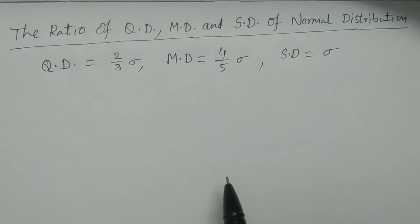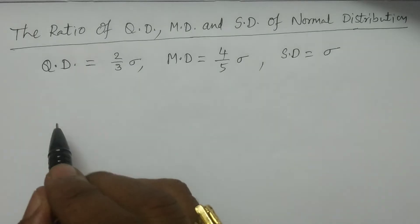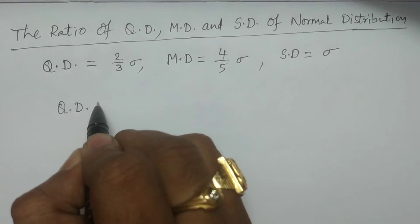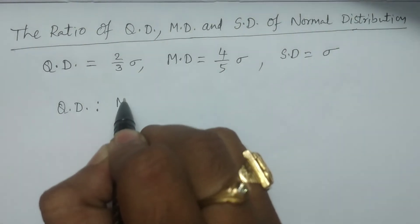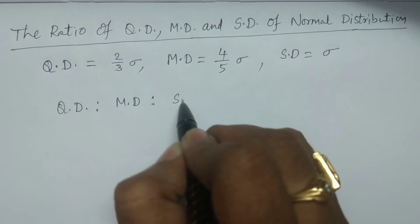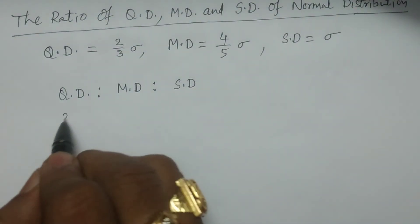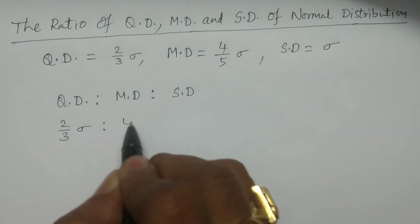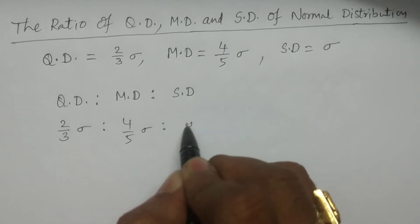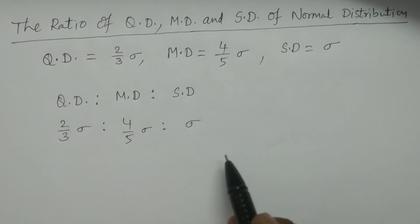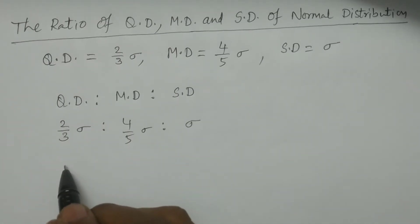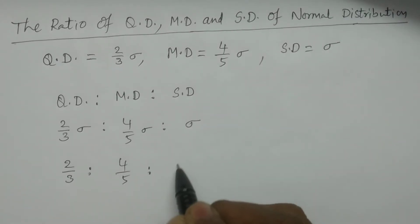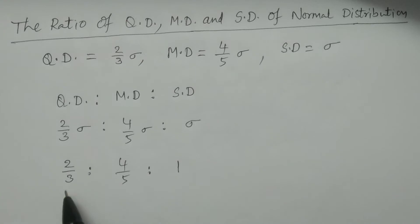Now I consider the ratio: quartile deviation to mean deviation to standard deviation. Quartile deviation is 2/3 sigma, mean deviation is 4/5 sigma, and standard deviation is sigma. By cancelling sigma throughout, the ratios become 2/3 to 4/5 to 1.